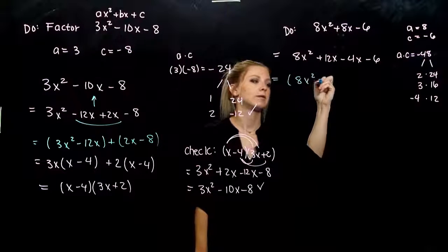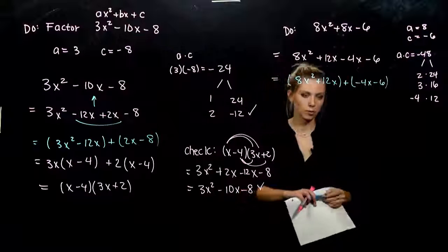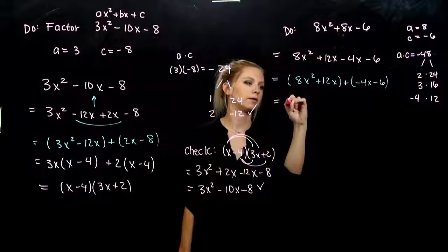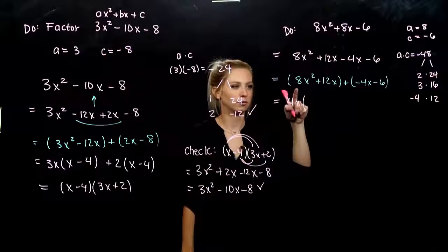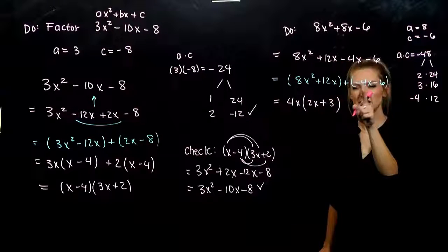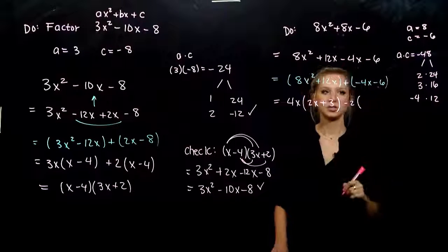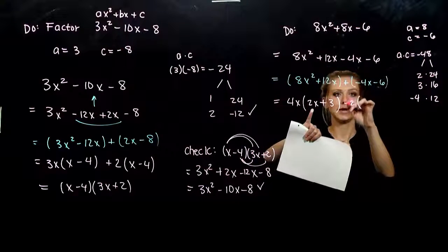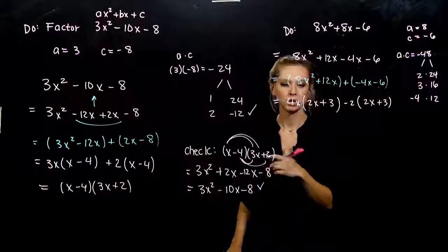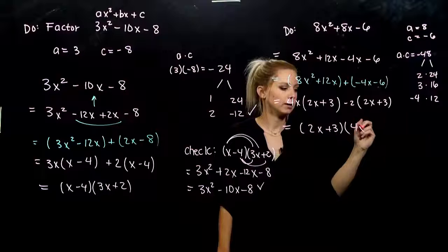So: 8x² plus 12x, and negative 4x minus 6. Grouping. Common between these two that we can take out of both is a factor of 4x. When we do that, what are we left with? I've got 2x plus 3. And we need these two insides to match exactly. Common between the second two that we can take out is a factor of negative 2. Negative 2 out of negative 4 gives me positive 2x, negative 2 out of negative 6 gives me positive 3. So common between these two is the factor 2x plus 3, and we're left with 4x minus 2.